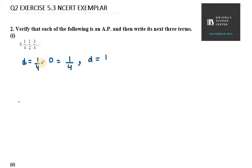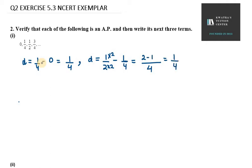D will be 1/2 minus 1/4. Now, 1/2 minus 1/4 — we need to take LCM to solve this. The LCM will be 4. We need to multiply the first term with 2, so it will be 2 minus 1, which gives us 1/4.